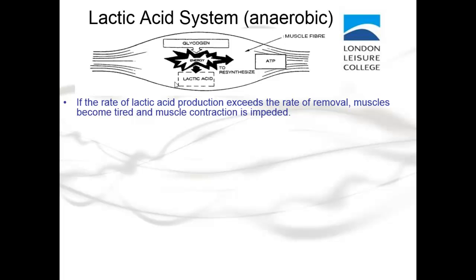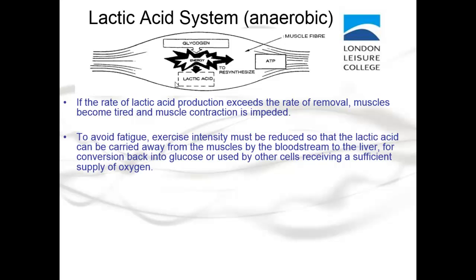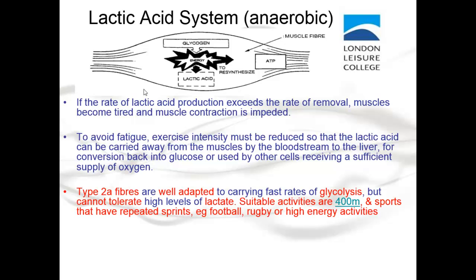If the rate of lactic acid production exceeds the rate of removal, muscles become tired and muscle contraction is impeded. To avoid fatigue, exercise intensity must be reduced so that lactic acid can be carried away by the bloodstream to the liver for conversion back into glucose, or used by other cells with sufficient oxygen. Type 2a fibers are well adapted to carry fast rates of glycolysis but cannot tolerate high levels of lactate. Suitable activities include 400 meters, sports with repeated sprints such as football and rugby, and high-energy activities lasting up to 90 seconds.